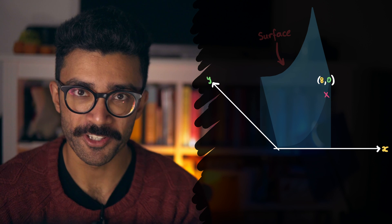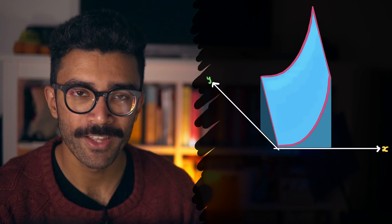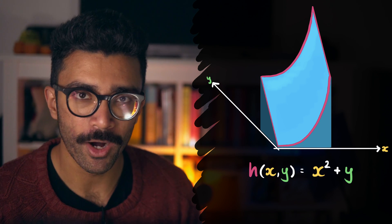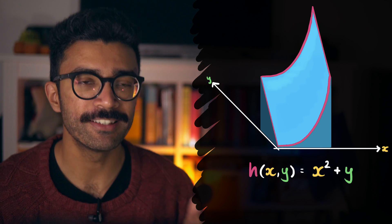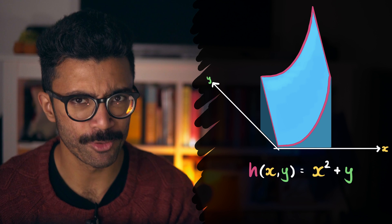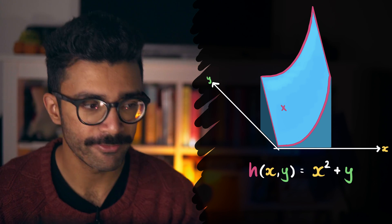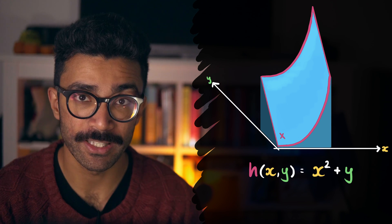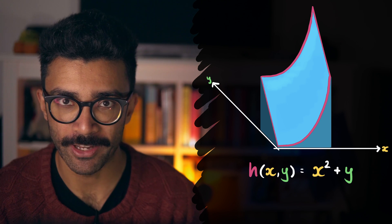For this particular surface, we can even write an equation for h, in terms of x and y. It looks something like this – x squared plus y. Feel free to pause the video here and convince yourself that this equation does indeed represent a surface like this, or at least a better drawn version of the surface. The easiest way to do this is to choose random values of x and y and compare the height that these values give with the height given for other nearby x and y values.